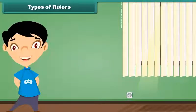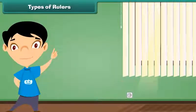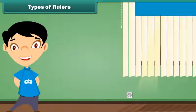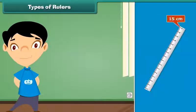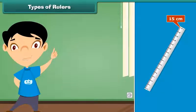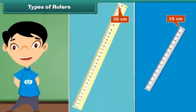A ruler comes in different lengths. The first ruler can measure length up to 15 cm. The second ruler can measure length up to 30 cm.